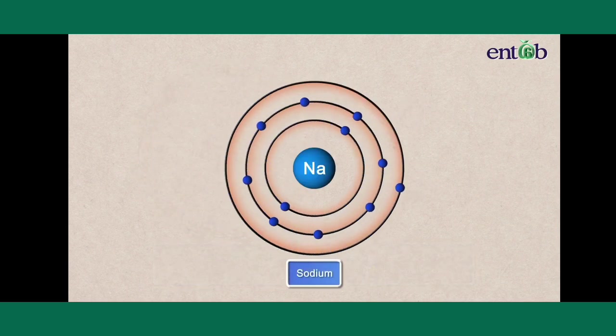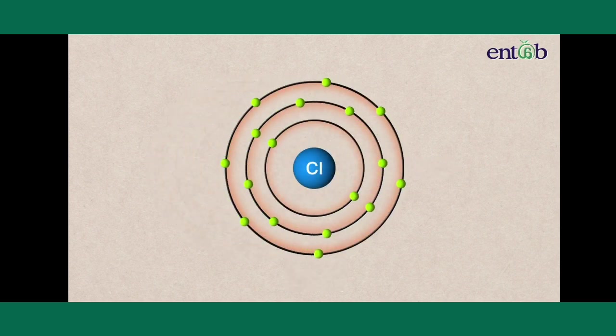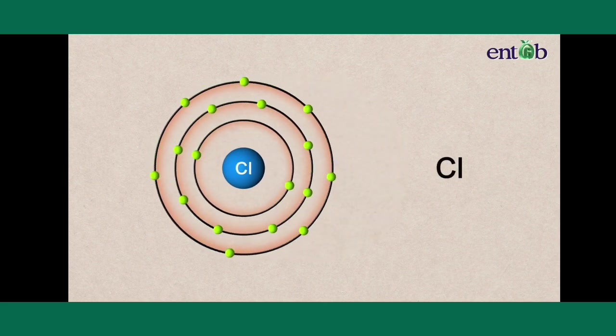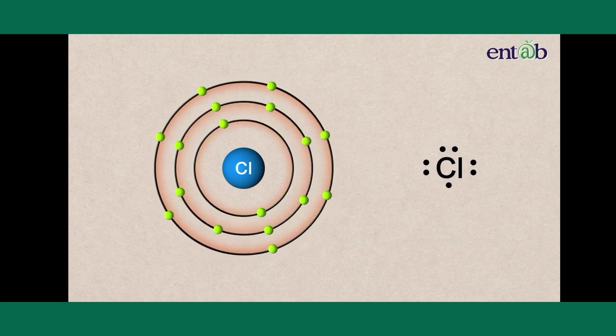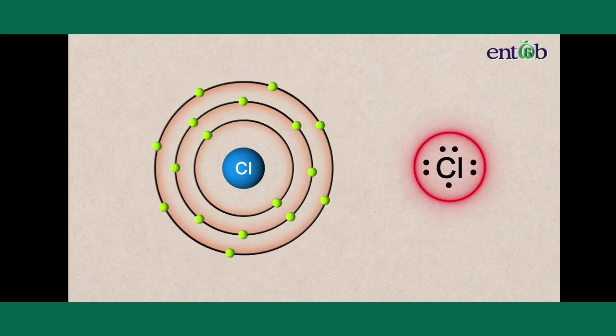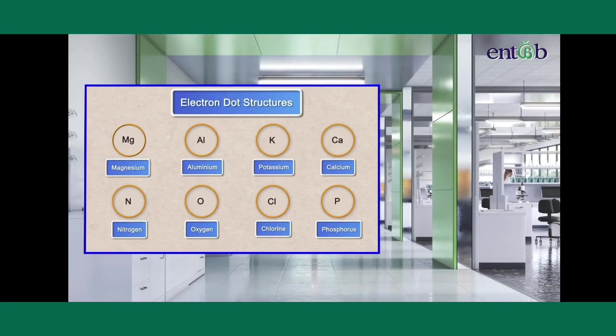For example, sodium is represented as Na dot and chlorine is represented as Cl and around Cl seven dots. You can predict the number of valence electrons by simply looking at the electronic structure or electron dot structure.